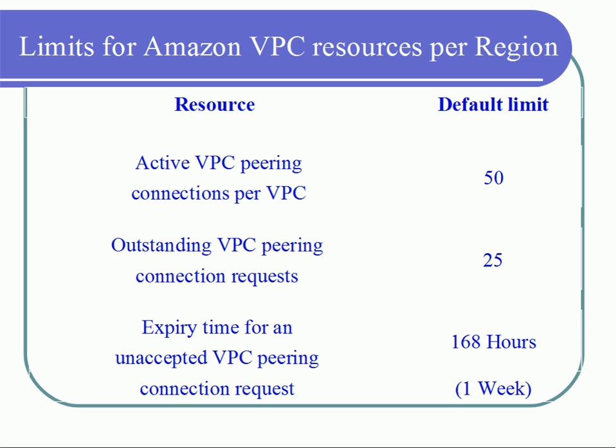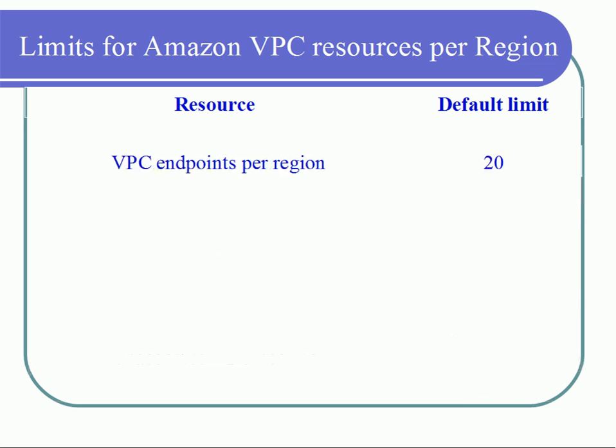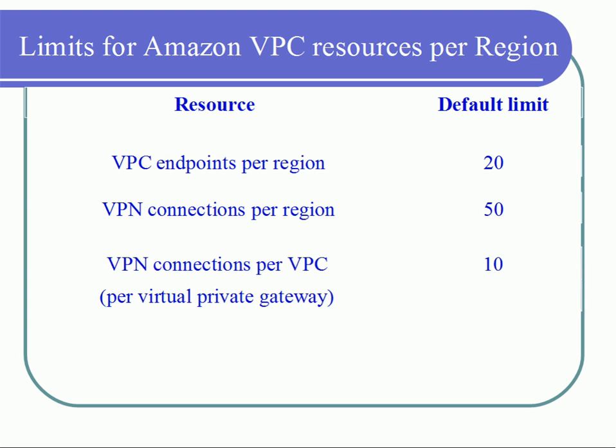Per VPC, you can have up to 20 endpoints. VPN connections per region can be up to 50. Per virtual private gateway, you can have up to 10 VPN connections per VPC.